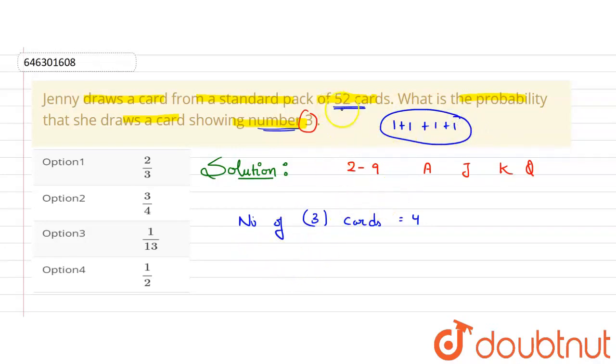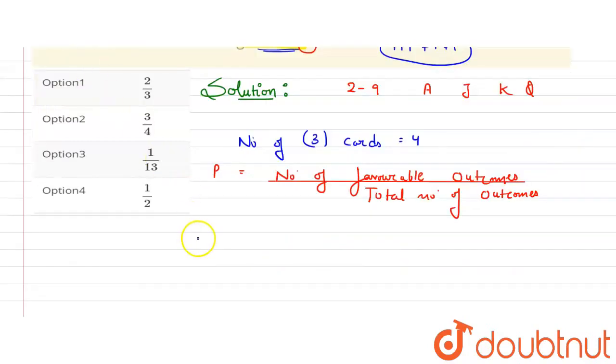And total number of cards, how much? 52. What do we need to find here? We need to find probability. So probability formula, what happens? Probability is equal to number of favorable outcomes divided by total number of outcomes.